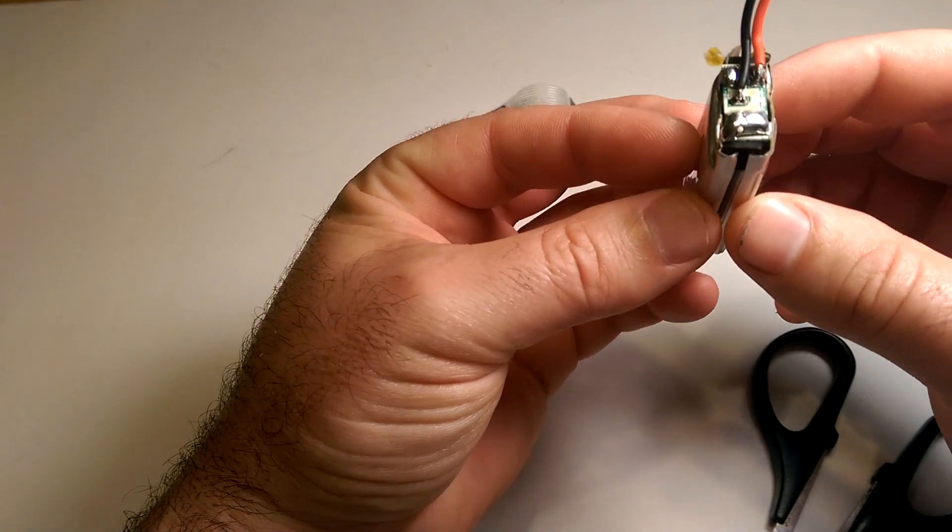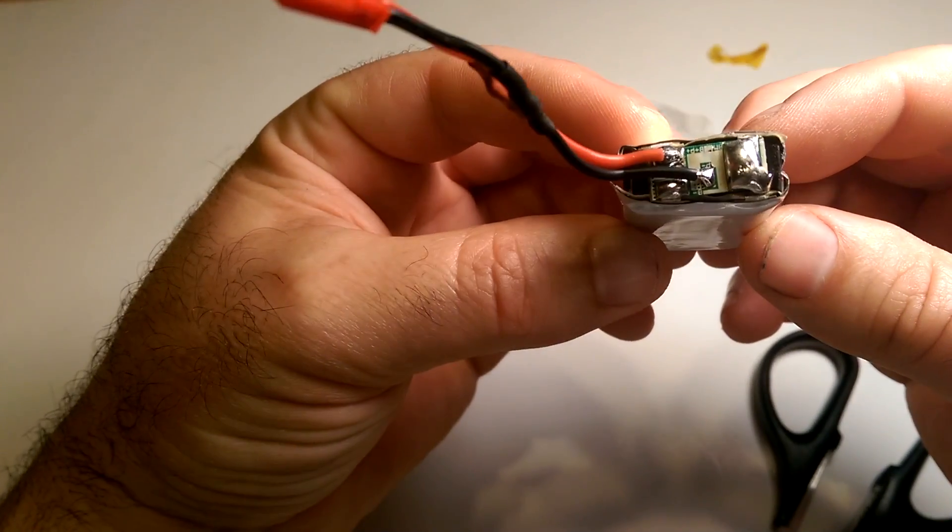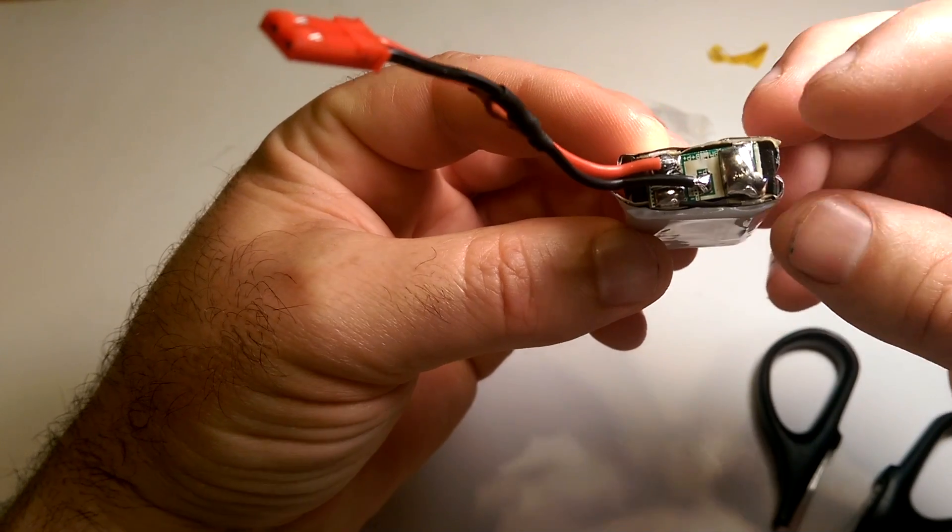Here we go. Here is the battery with that little circuit board I was talking about. And you can see the solder points on there.